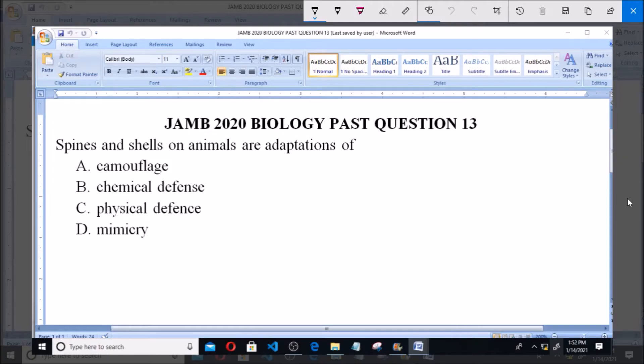Hello, good day and welcome. I'll be answering JAMB 2020 Biology past question 13. Spines and shells on animals are adaptations of: A) camouflage, B) chemical defense, C) physical defense, and D) mimicry. Now, most organisms have adapted or possess some adaptive features.